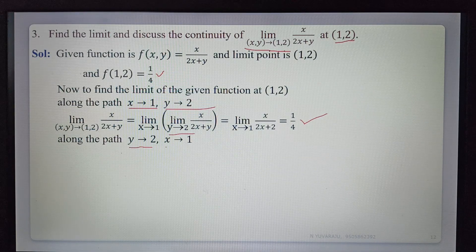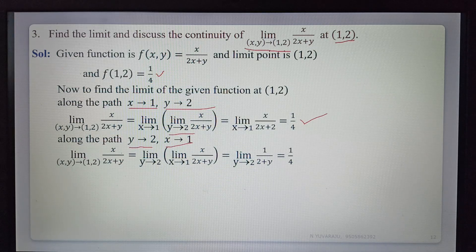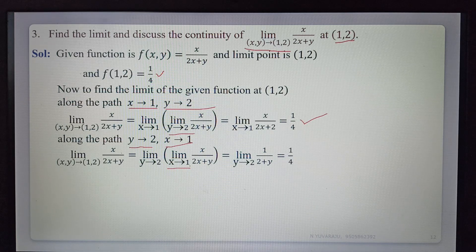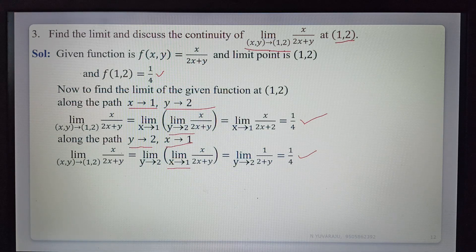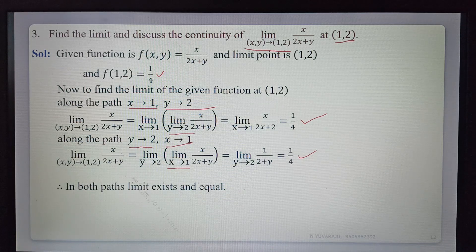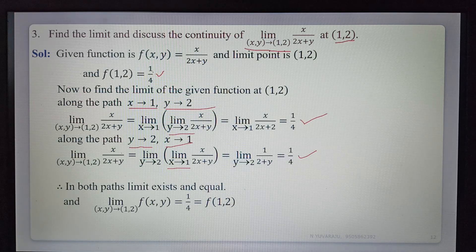Second path — y tends to 2, then x tends to 1: limit as (x,y)→(1,2) of x/(2x+y) = limit as y→2 of [limit as x→1 of x/(2x+y)]. Substituting x = 1 gives 1/(2+y), then substituting y = 2 gives 1/4. In both paths the limit equals 1/4, so the limit exists. The limit equals the function value f(1,2) = 1/4. Therefore, the given function is continuous at (1,2), provided the denominator 2x + y ≠ 0.